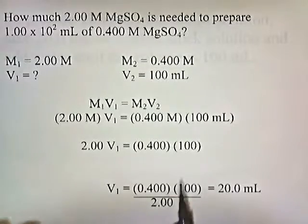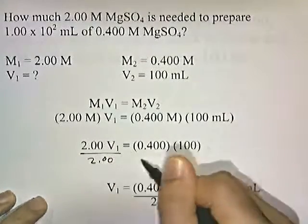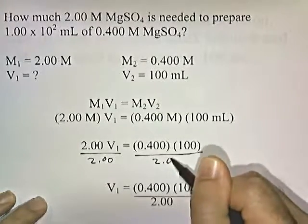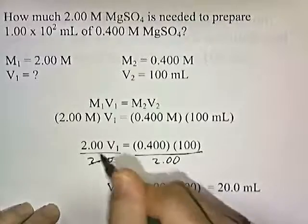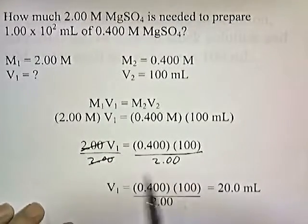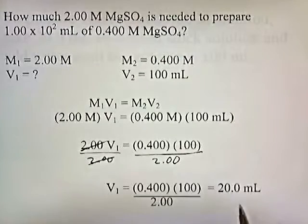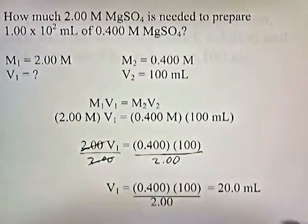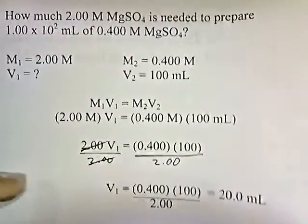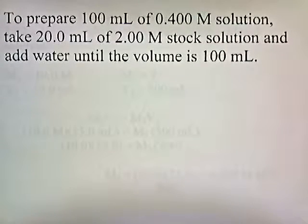To solve for V1, I'll divide both sides by 2. The 2s cancel, and V1 equals 0.4 times 100 divided by 2, which gives us 20 milliliters. This 20 milliliters is the amount of stock solution we need to prepare 100 milliliters of the dilute solution. To re-express that: to prepare 100 milliliters of the 0.4 molar solution, you take 20 milliliters of the 2 molar stock solution and add water until the volume is 100 milliliters.